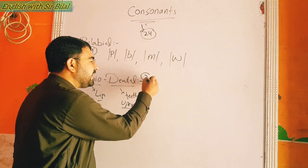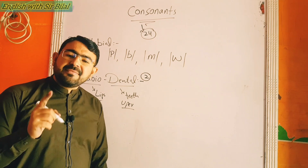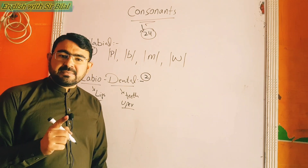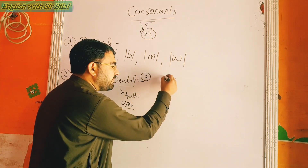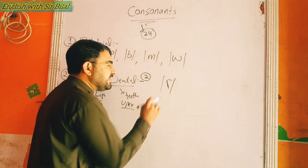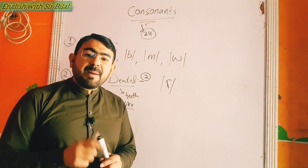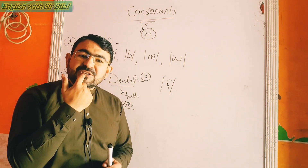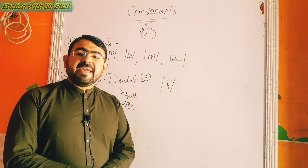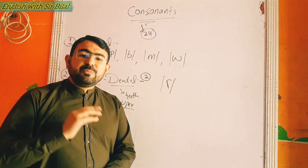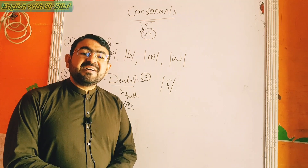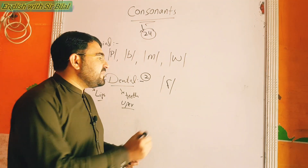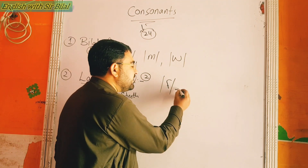Labio-dentals are two sounds. The first labio-dental sound is /f/. Your upper teeth touch your lower lip, and then you push air forward in your mouth — you produce the sound /f/. For example: 'feel'.